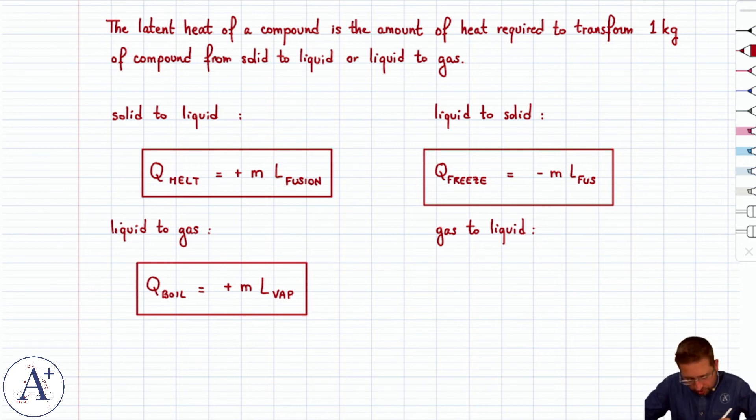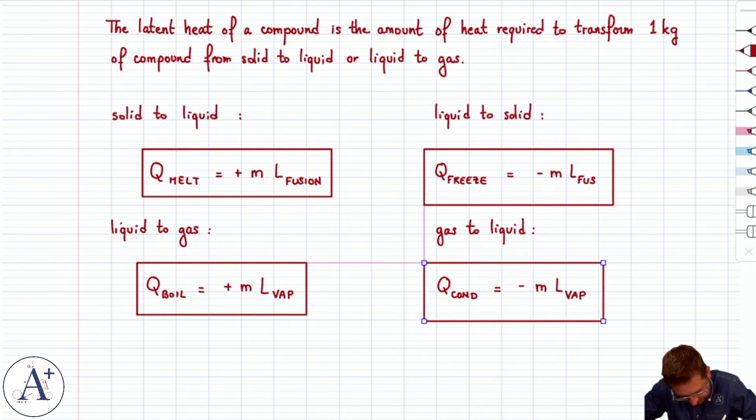And, of course, if you wanted to condense steam into liquid water, you would have to remove the same amount of heat in magnitude. Of course, you'd need a minus here because it would be a loss to your system.